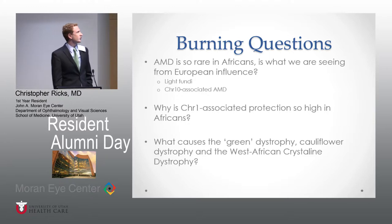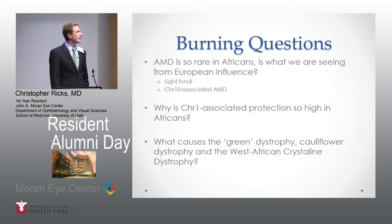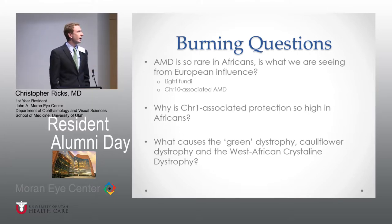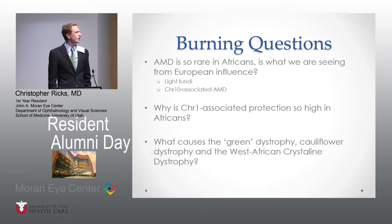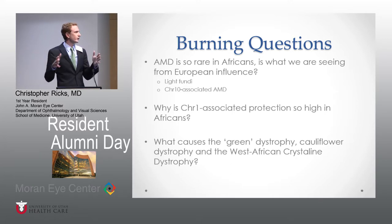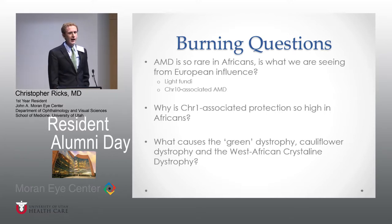This leaves us with some burning questions. AMD is so rare in Africans — so is what we're seeing really AMD? And if it is, is it from European influence? Ghana has been either ruled or visited very frequently by Europeans for four or five hundred years. So some of these patients with lighter fundi — is this European genetics getting mixed in, possibly a little bit of chromosome 10? Next question: why is the chromosome 1-associated protection so high in Africans? Even if you have the risk factor alleles, if you have even one protection allele, you just don't get it. Why is that so high in Africans?